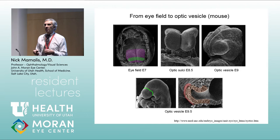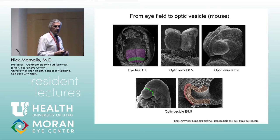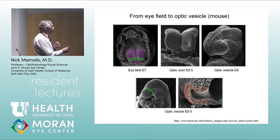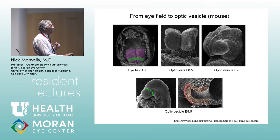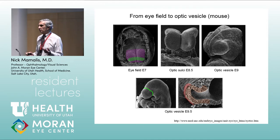Whenever we're talking about the eye, it's important to understand where it comes from embryologically. Different parts of the eye come from different layers, which helps explain the diseases that affect the eyes. When you look at an embryo — especially in the first four to six weeks — a mouse, a chicken, and a human all look exactly the same.